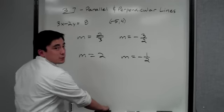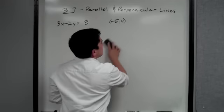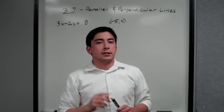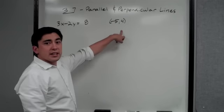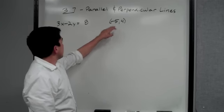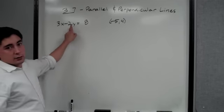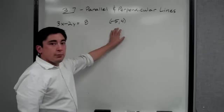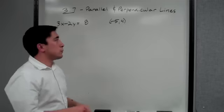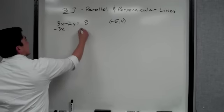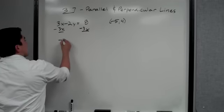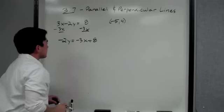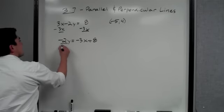For our second example: find the equation in standard form of a line that crosses through negative five, four, and is perpendicular to 3x minus 2y equals 8. The first thing we need to find is slope. We have a point, now we need slope. So: negative 2y equals negative 3x plus 8, and we divide by negative 2 to get y by itself.